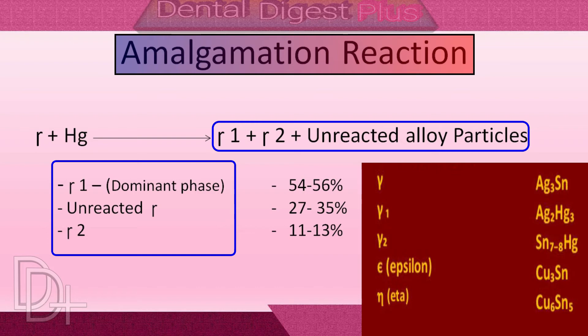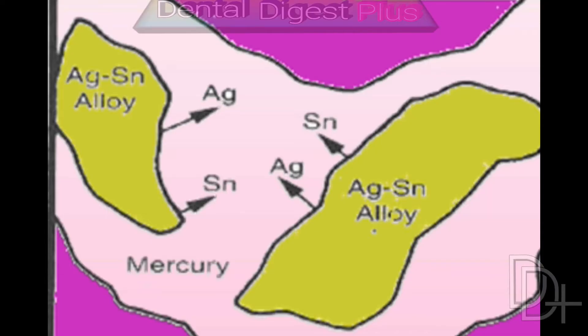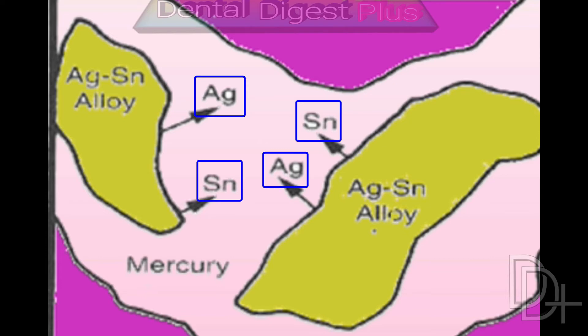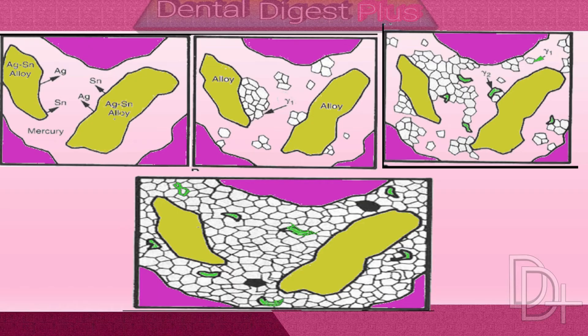Here in this first picture you can see that as the reaction starts, silver and tin diffuse into the mercury from the silver-tin alloy. Mercury has a limited solubility for silver and tin. Solubility of silver in mercury is 0.035% by weight, and solubility of tin in mercury is 0.6% by weight.